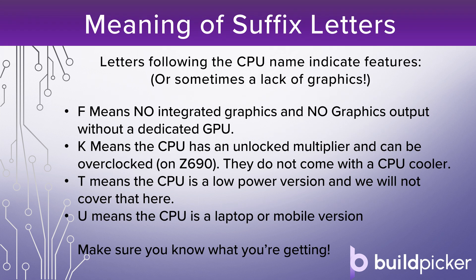The letters after the CPU name are important because they indicate features or a lack of graphics. An F after the CPU name — and this goes across the board for Intel — means there are no integrated graphics and no graphics output without a dedicated GPU. If you build a PC with an F CPU and no GPU it won't work. A K after the CPU name means the CPU has an unlocked multiplier and can be overclocked on a Z690 motherboard. K CPUs also ship without a CPU cooler, so that needs to be a separate purchase. T means the CPU is a low-power version often seen in NUCs and office builds, and U means it's a laptop or mobile variant. Neither T nor U are generally available to consumers, so make sure you know what those letters mean when you're choosing.